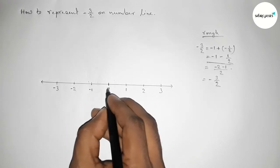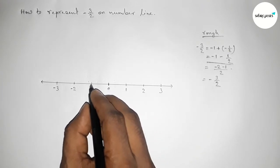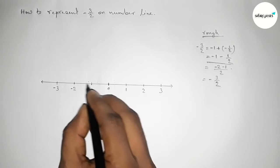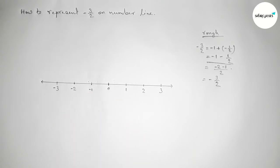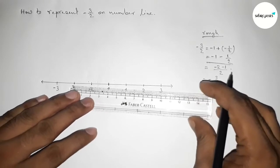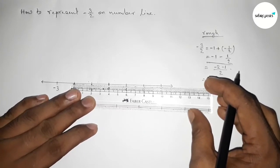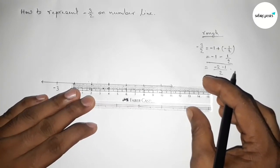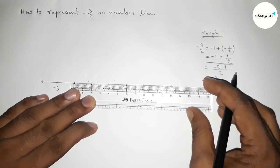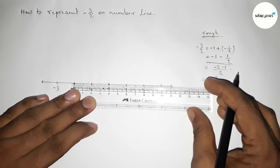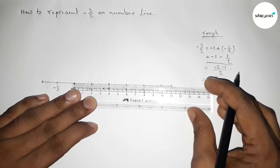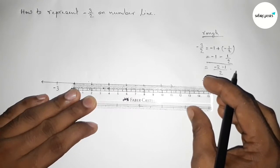So between zero to minus one, this is minus one. And now finding the middle between minus one and minus two for minus half. So now finding the half or minus one by two between minus one and minus two by using scale, okay.